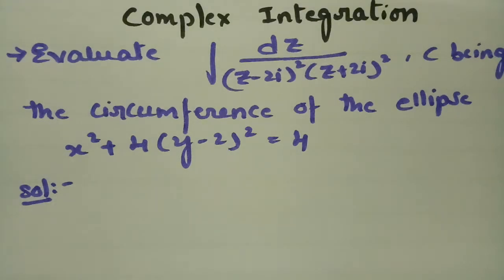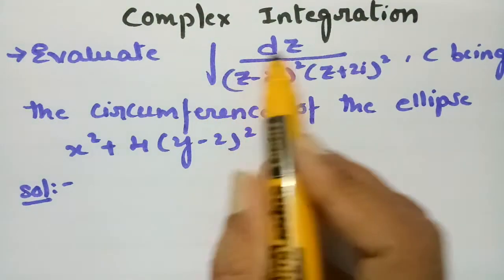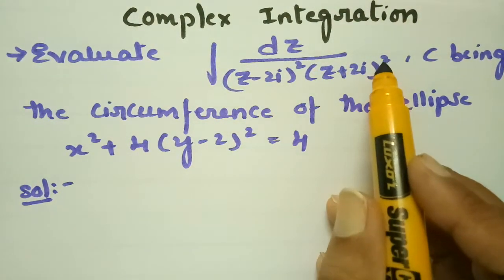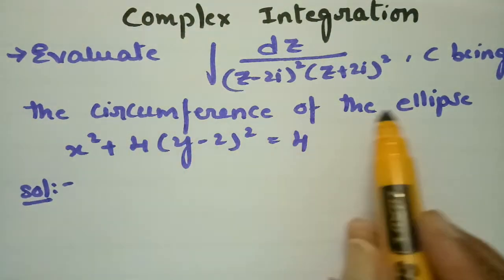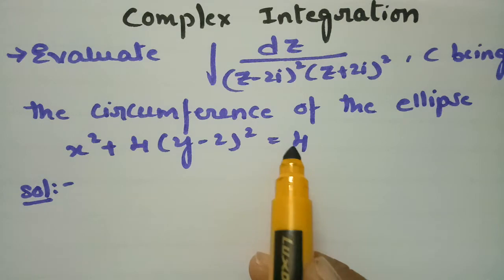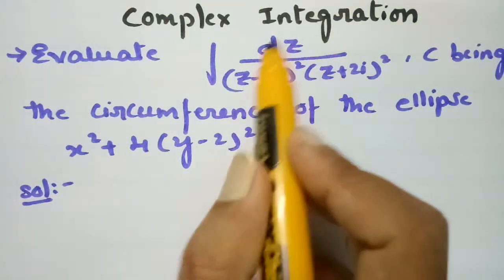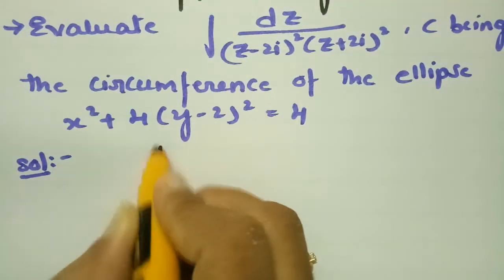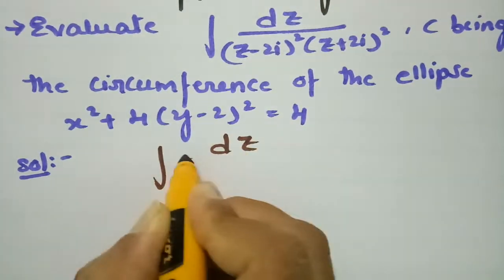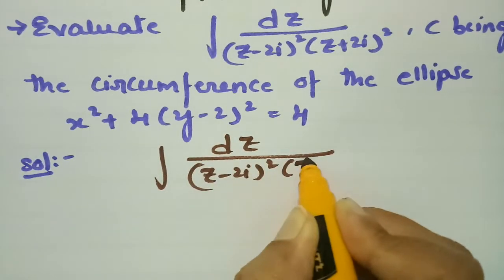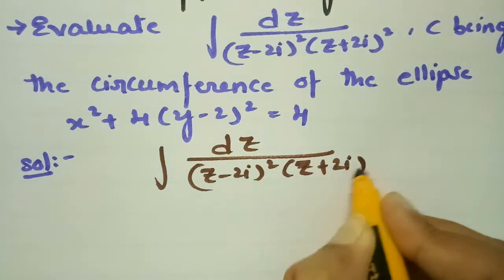Today's video is on the most important problem from complex integration. I am going to evaluate the integral dz divided by (z minus 2i) squared plus (z plus 2i) squared, where c is the circumference of the ellipse x squared plus 4 times (y minus 2) squared equals 4. The integral given is dz divided by (z minus 2i) whole square into (z plus 2i) whole square.